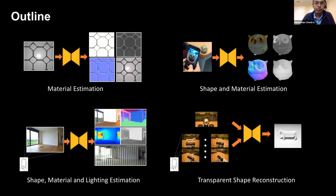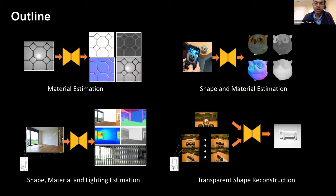The talk will cover material estimation, shape and material estimation, then add lighting to the mix, and if time permits, complex light paths with transparent objects. I'd also like to advertise the principal author of these works, my first PhD student Zheng Chen Li, who is in his final year and will be looking for postdoc positions very soon.